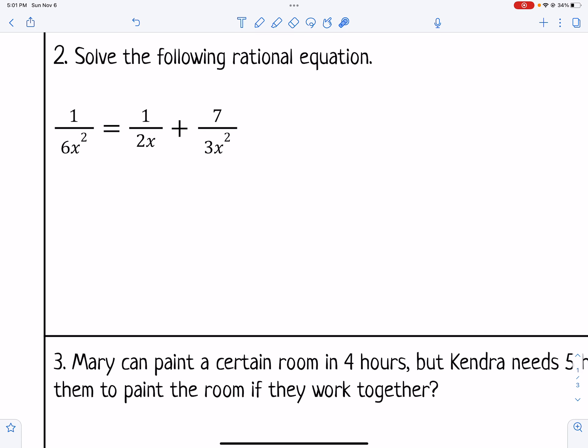For number 2 we're going to solve the following rational equation. But this type cannot just be cross multiplied. We've got to get a like denominator and then we can cancel them all out. So I'm going to make them all become 6x squared. So I'm going to go ahead and write that down.